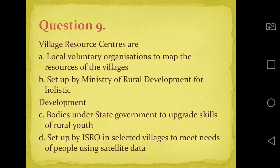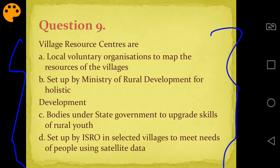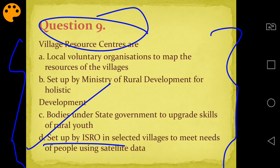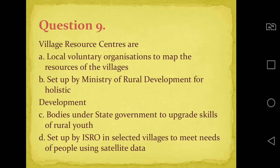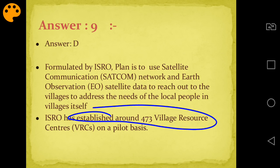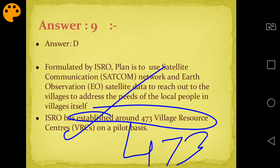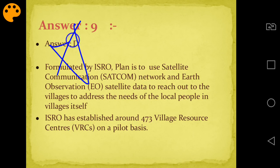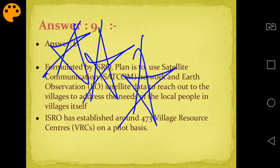Question number nine: Village Resource Centers - what are they? The correct answer is D. Village Resource Centers are set up by ISRO in selected villages to meet the needs of people using satellite data. ISRO collects satellite data to help people in need. ISRO has established approximately 473 Village Resource Centers so far. Add this to your notes and star mark it.